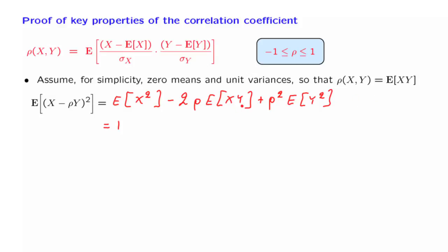The expected value of x times y is the same as the correlation coefficient in this case. So we have minus 2 ρ squared. And from here, we have ρ squared. And by the previous argument, again, this quantity, according to our assumptions, is equal to 1. So we're left with this expression,